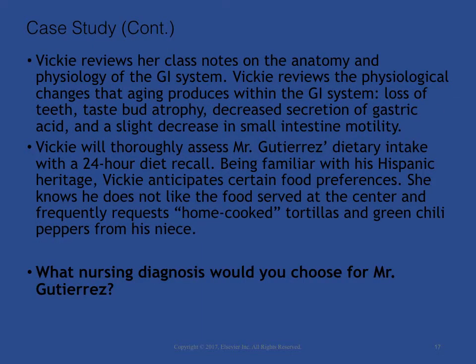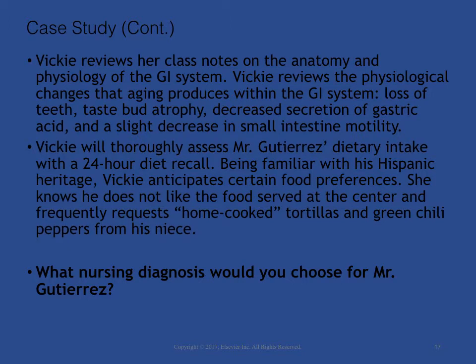Case Study continued: Vicki reviews the anatomy and physiology of the GI system, and the physiological changes that aging produces within the GI system — such as loss of teeth, taste bud atrophy, decreased secretion of gastric acid, and a slight decrease in small intestine motility. Vicki will thoroughly assess Mr. Gutierrez's dietary intake with a 24-hour diet recall and, being familiar with his Hispanic heritage, anticipates certain food preferences. Nursing diagnosis: Constipation related to poor eating habits and insufficient fiber intake.